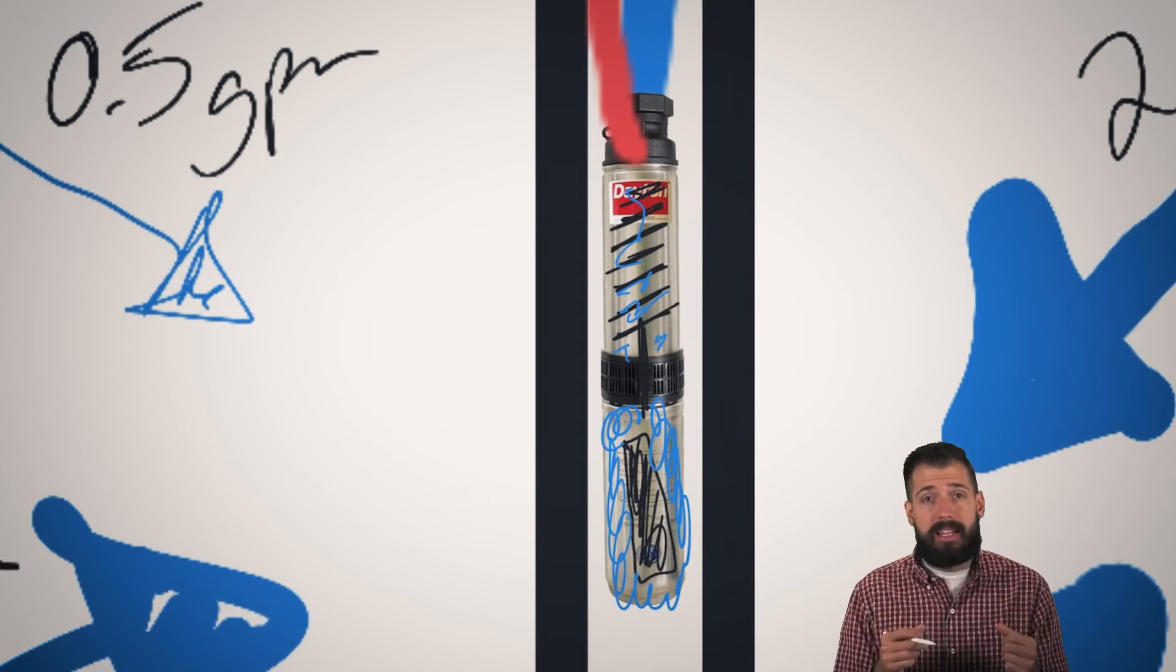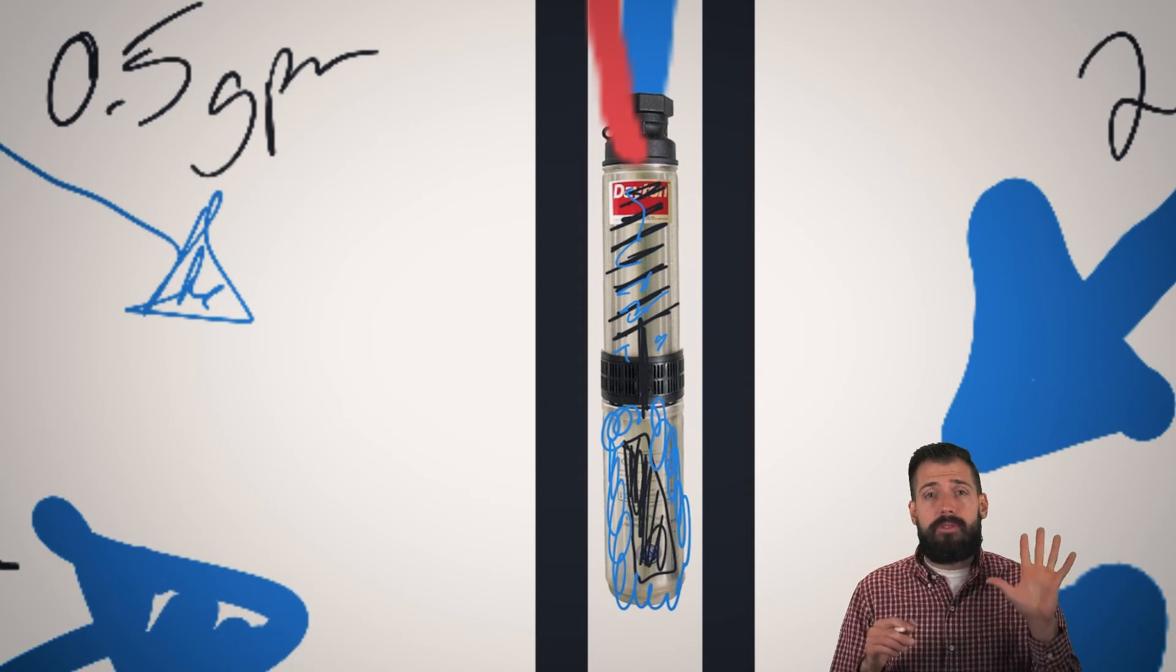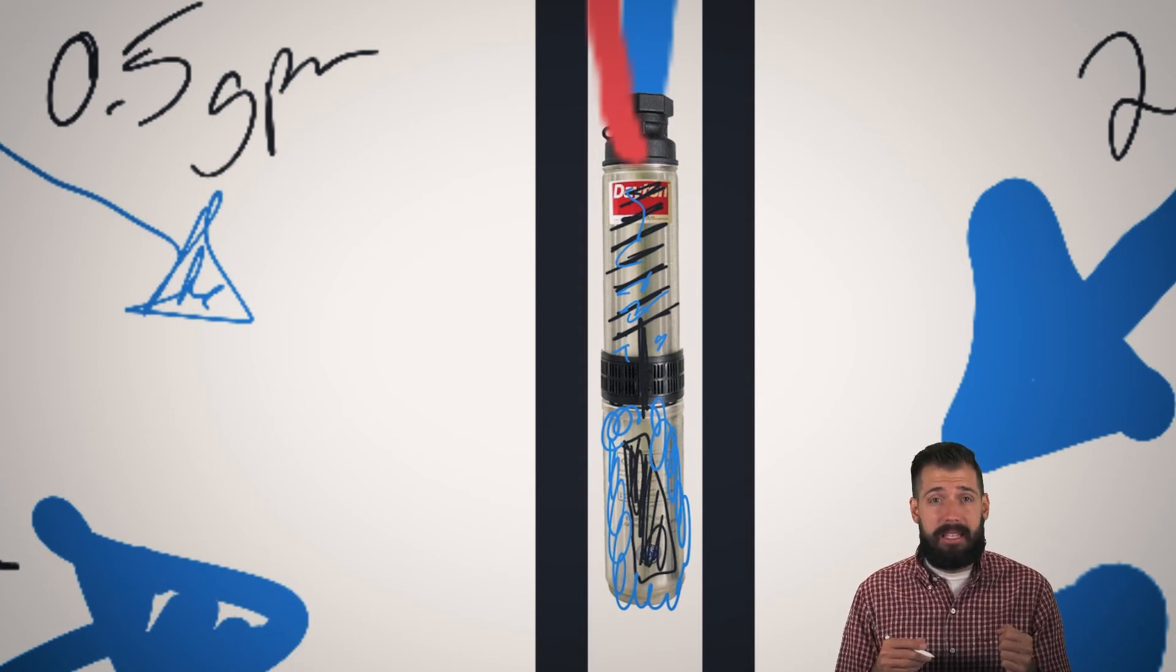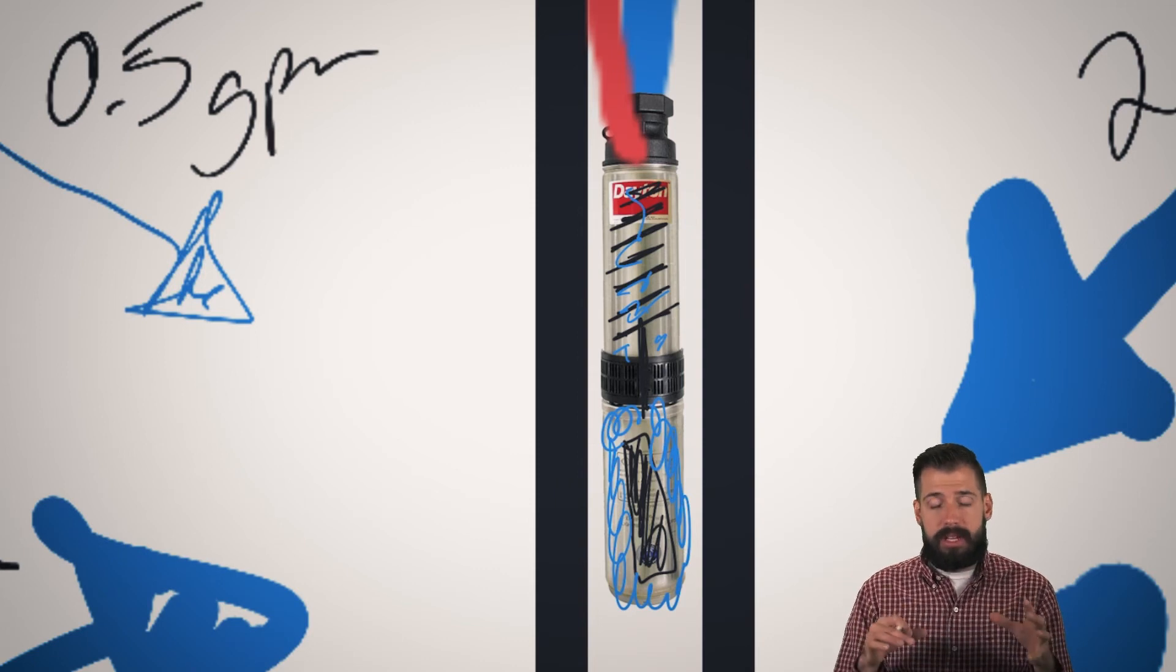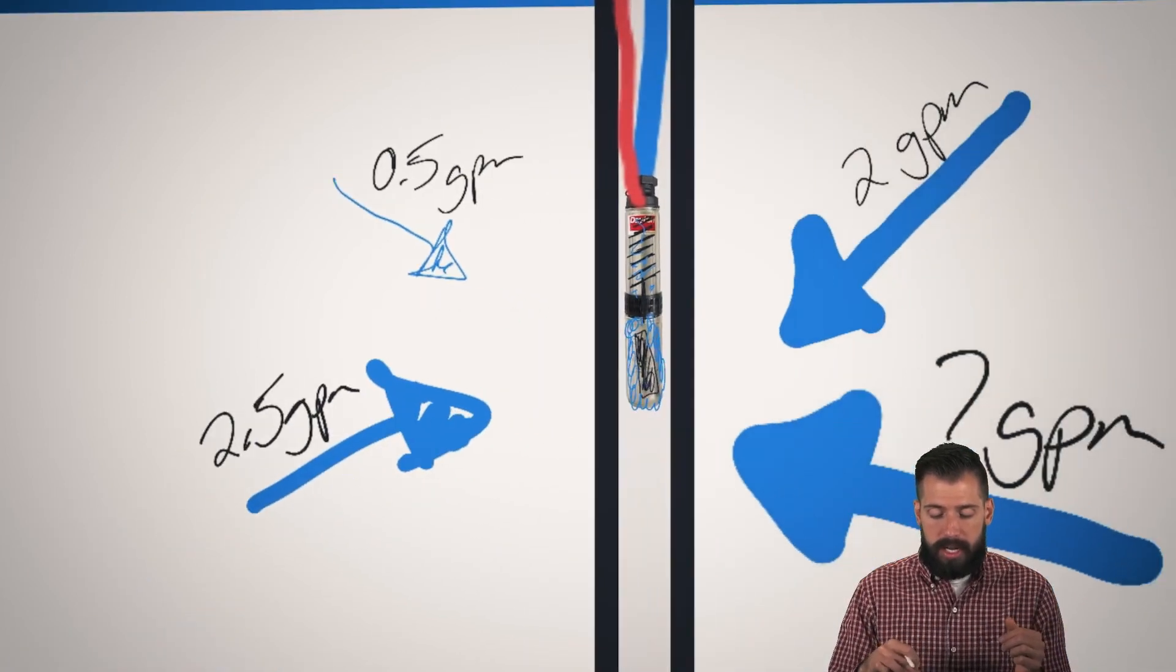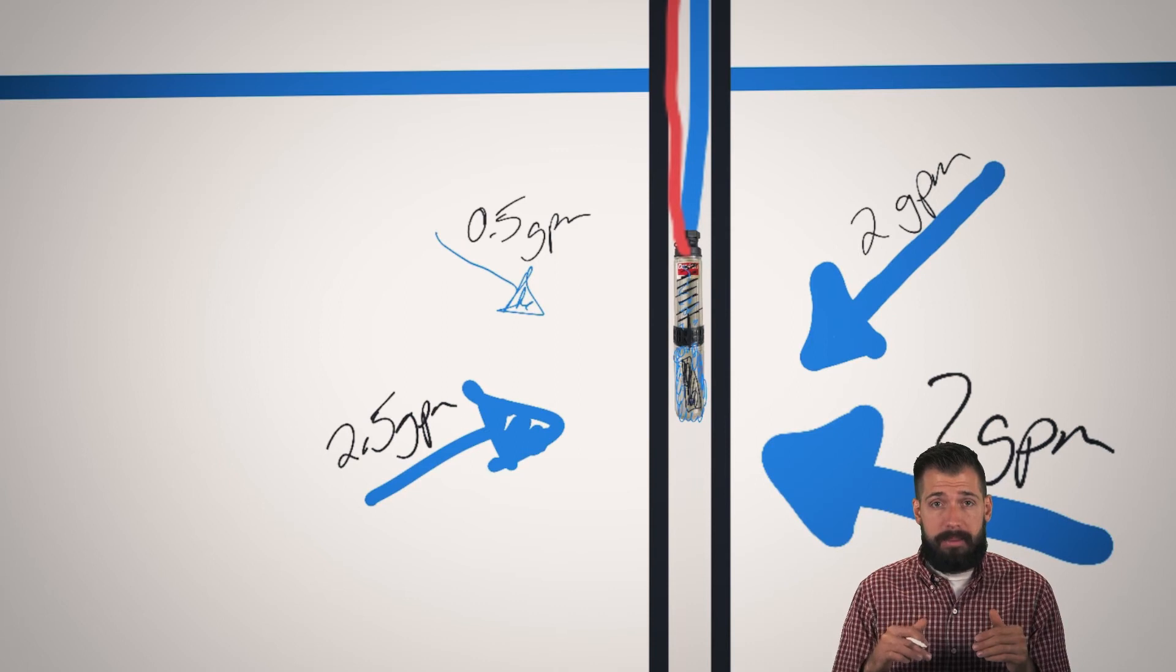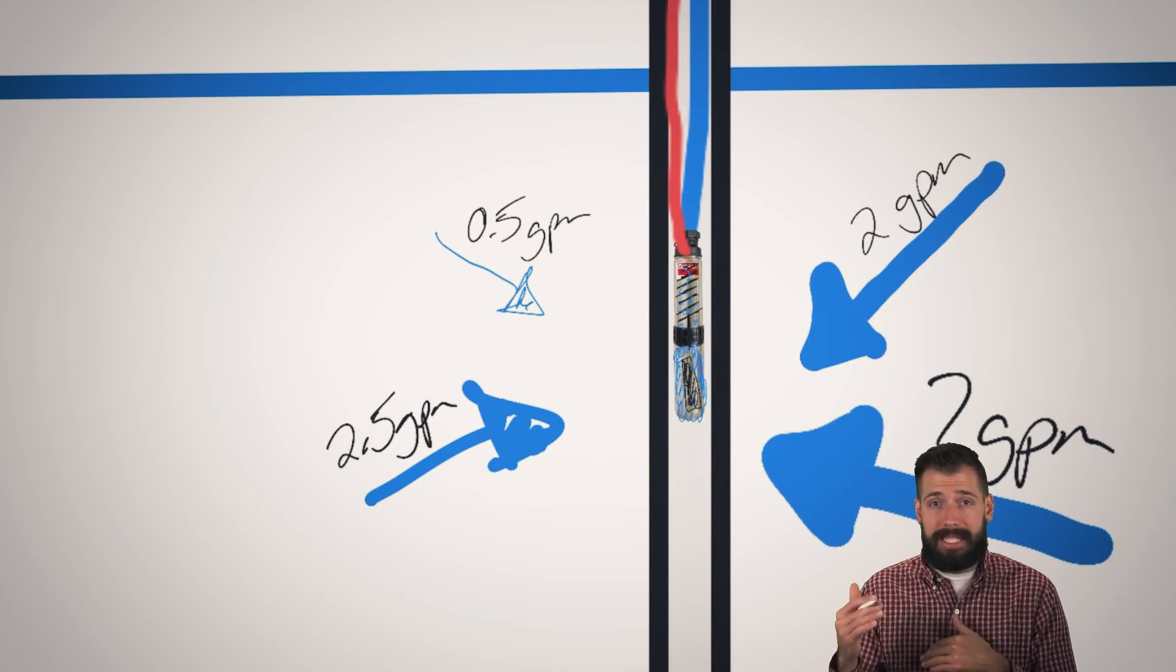But maybe this particular pump, instead of being able to produce 12 gallons per minute, can only do two gallons per minute, or can only do five gallons per minute, or maybe it's broken and it can only do half a gallon per minute. So it doesn't matter theoretically how much water can come back into this pipe. What matters is what am I actually getting?